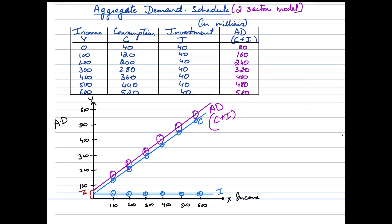This is how the aggregate demand would be depicted in a two sector model. This is a schedule here and the schedule has columns namely income, consumption, investment and aggregate demand which is a total of consumption and investment expenditure since it is a two sector model. We have income going upwards from 0 to 600, consumption also increasing from 40 to 520. Investment is considered independent of income and hence it remains constant at all income levels. And aggregate demand is a simple addition of C plus I and this is how you derive the figures.